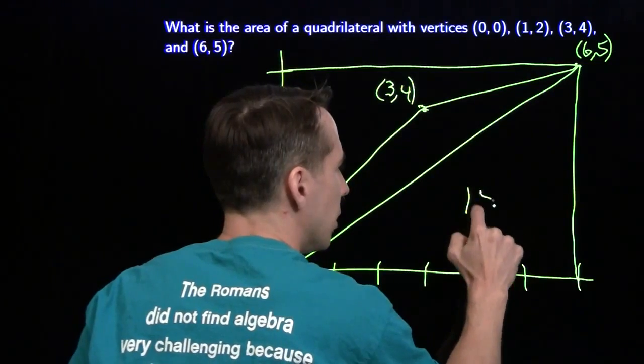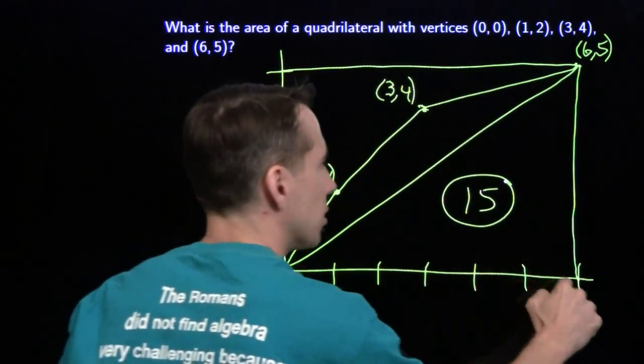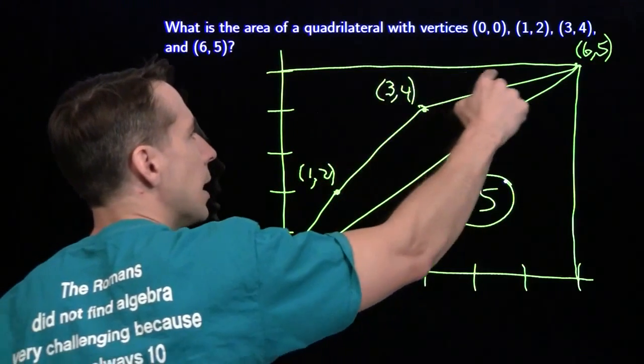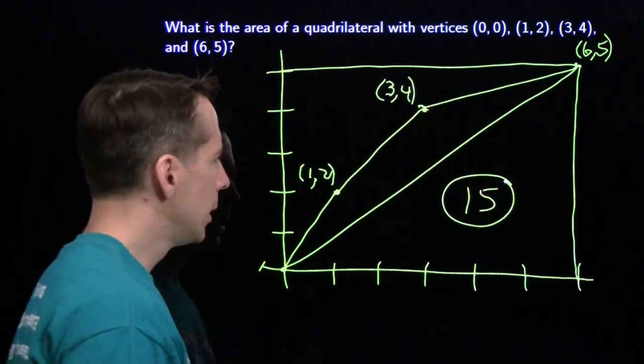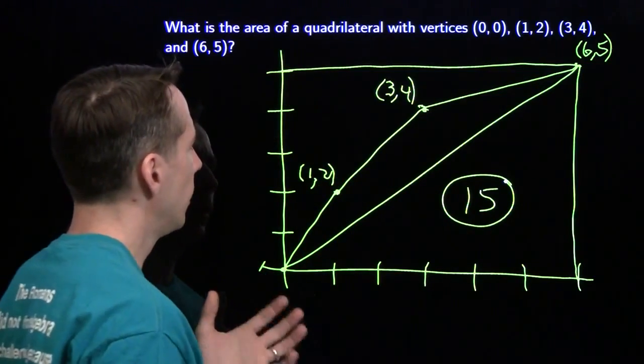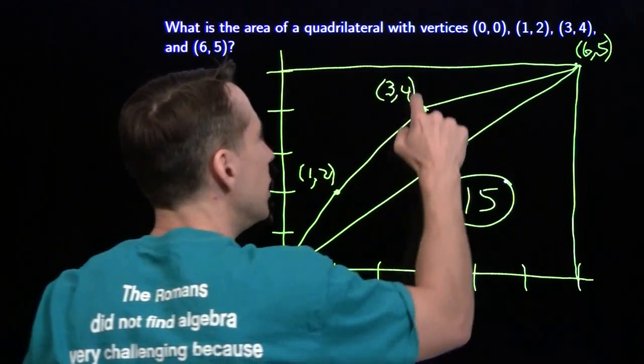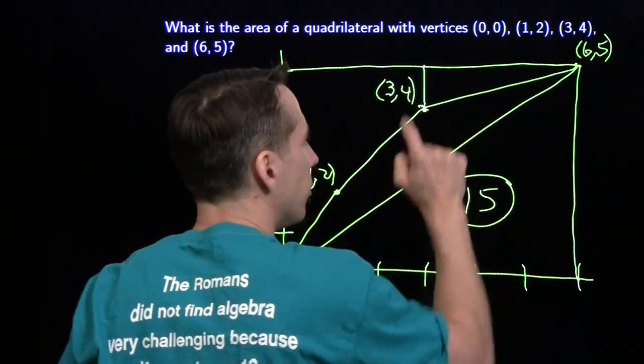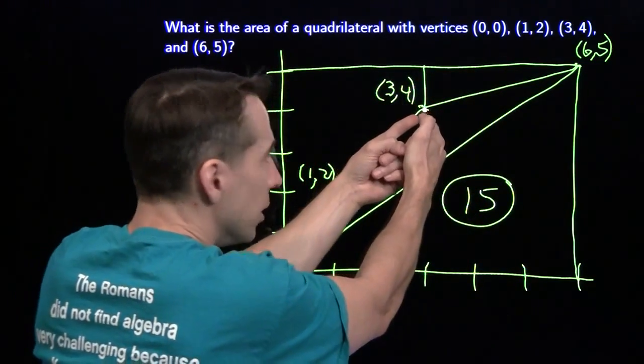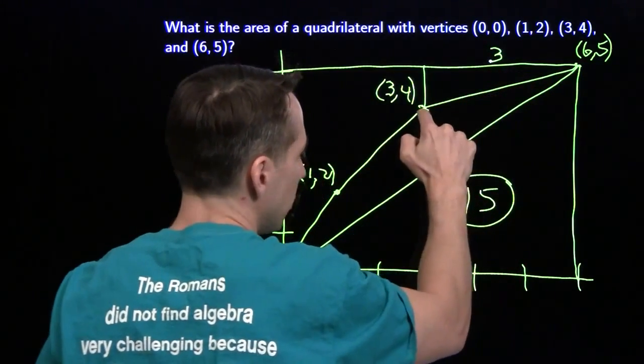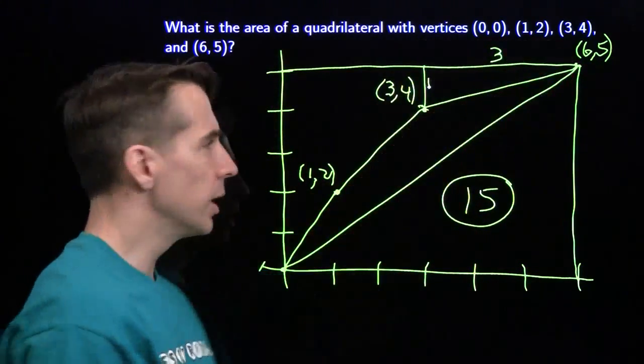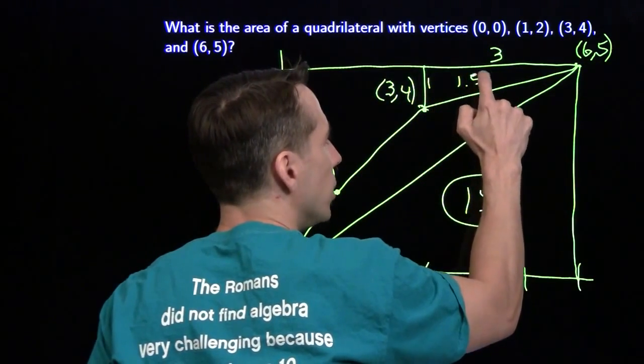This piece right here, its area is 15 - 6 times 5 divided by 2. But this piece out here is another weird shape that I don't have a formula for. It's got a right angle there, though. Maybe I can cut this into pieces that are easier to deal with. If I drop a line right there, right triangle, I can handle right triangles. The x-coordinate here is 3, this is 6, so this length is 3. This is 4, this is 5, so this length is 1. This right triangle, 1 times 3 divided by 2, has area 1.5.